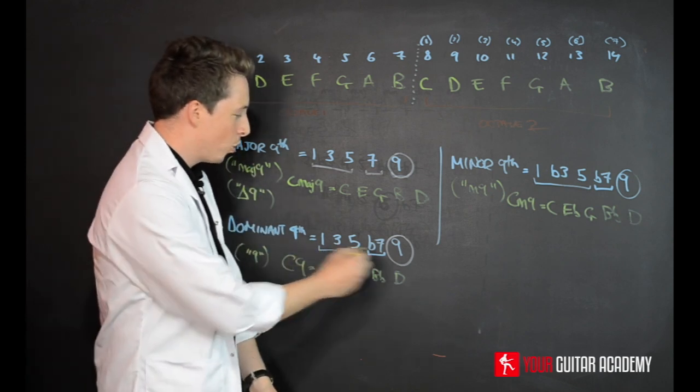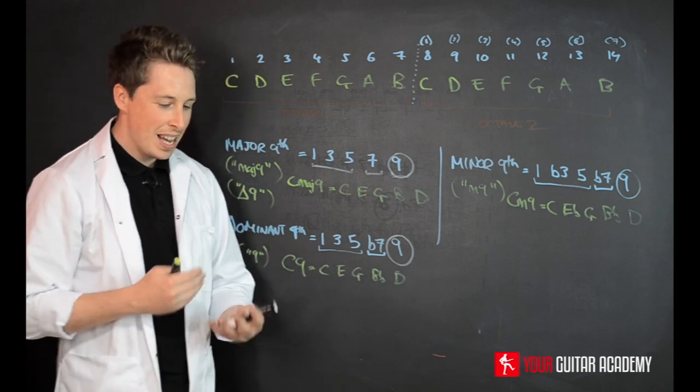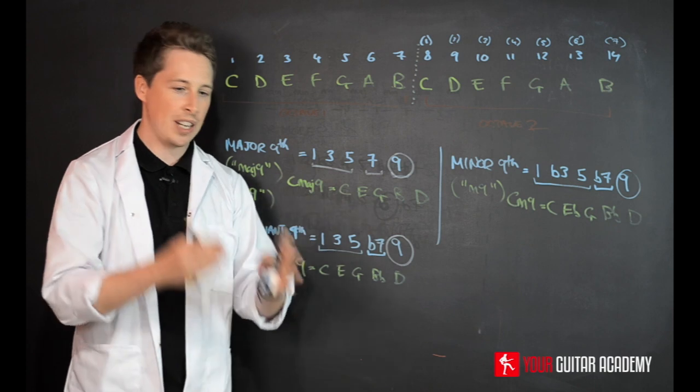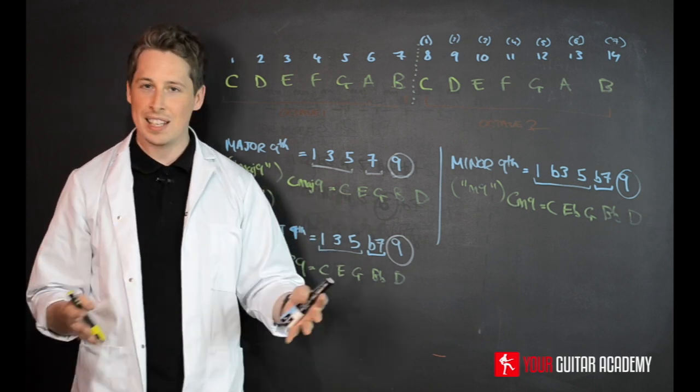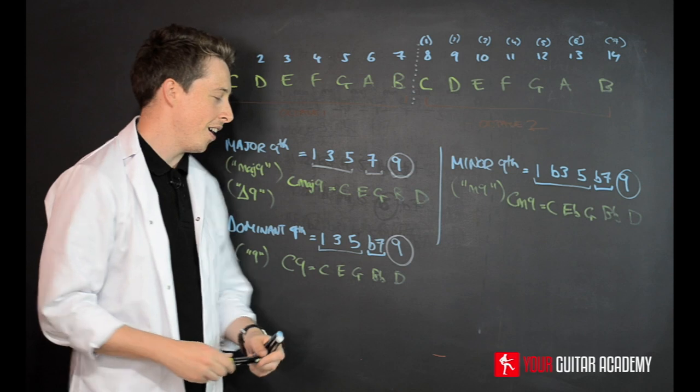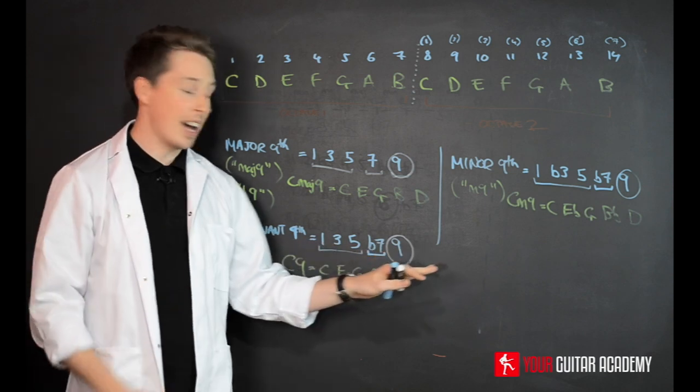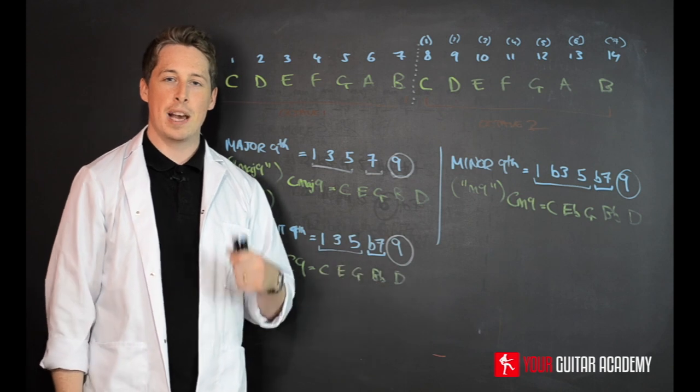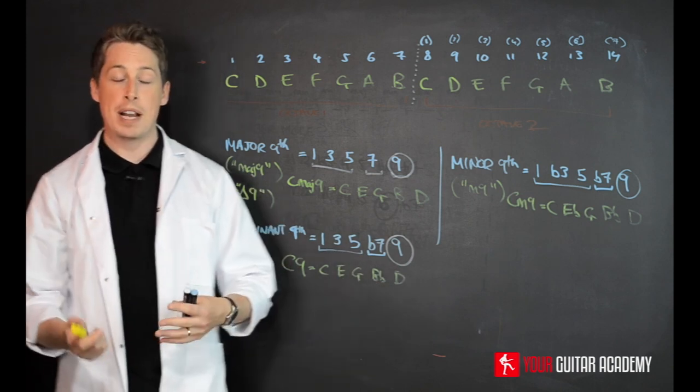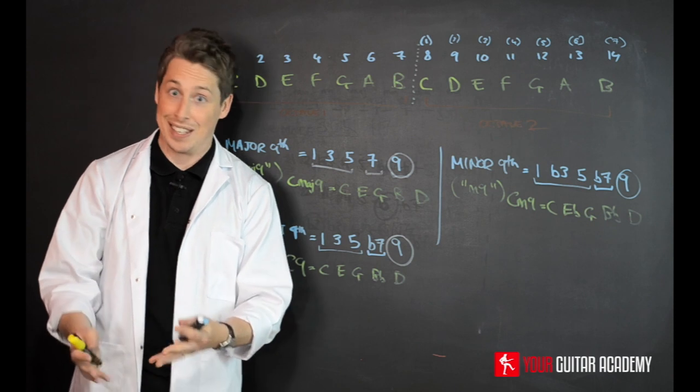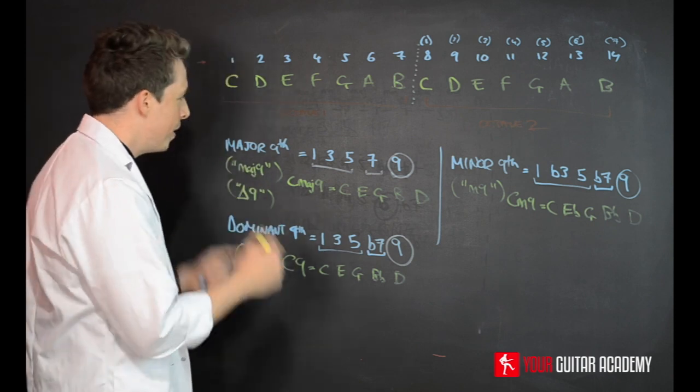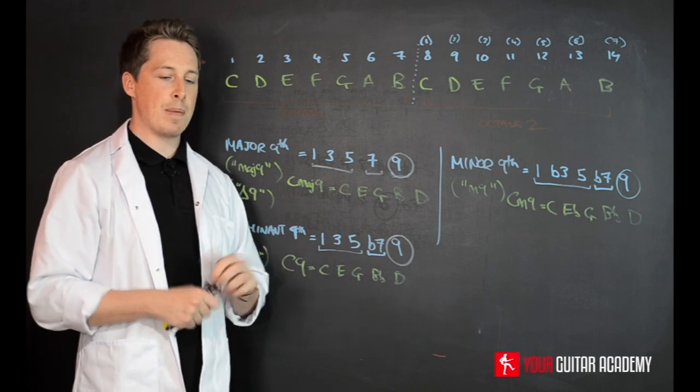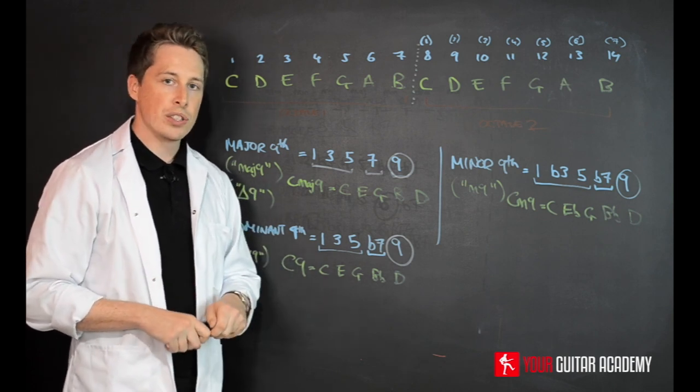When you're looking at a chord which has got five notes in it, it starts to get really quite tricky to put together a selection of good variety of chord shapes on the guitar with five different notes in them. So this is where we start to get a bit selective about the notes that we use. This is what I mean about theory versus reality.